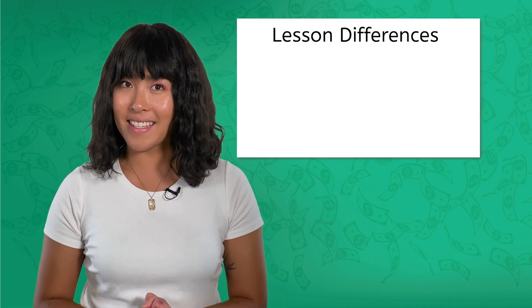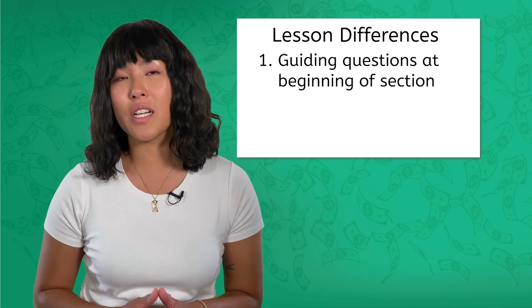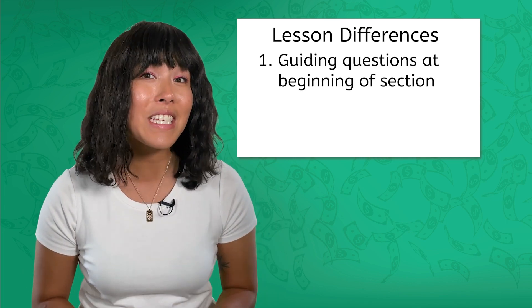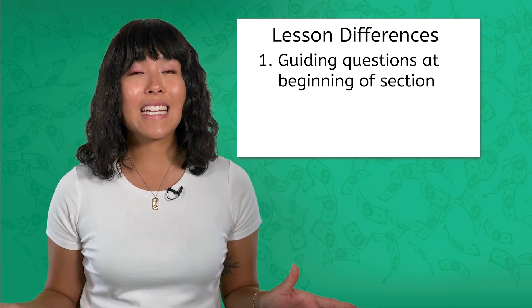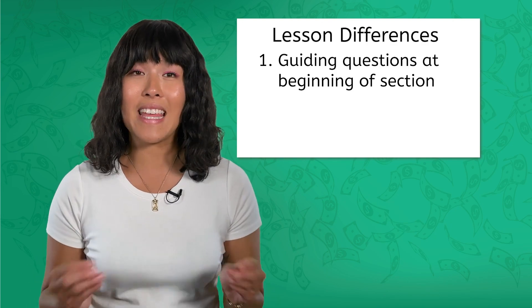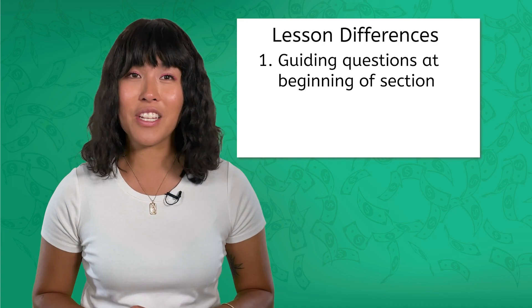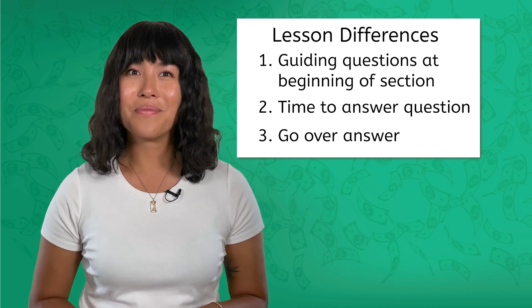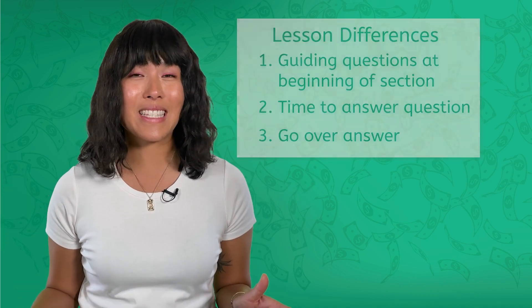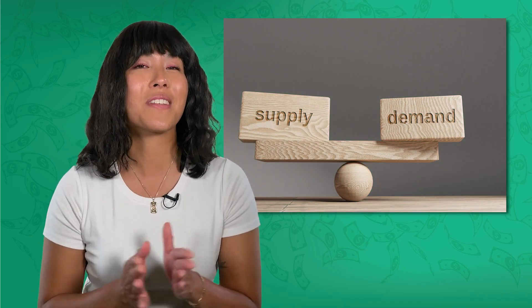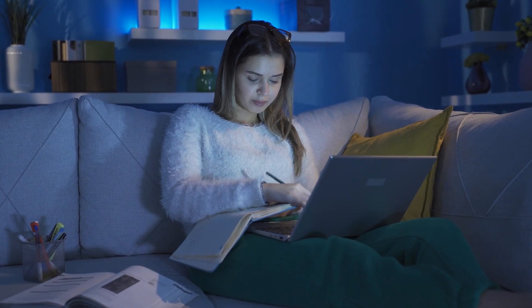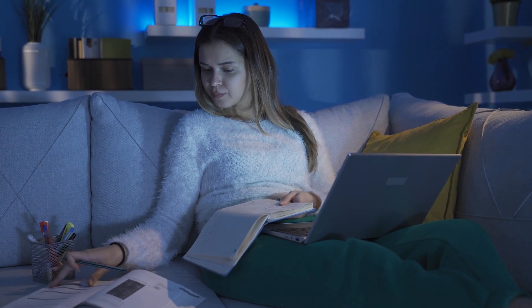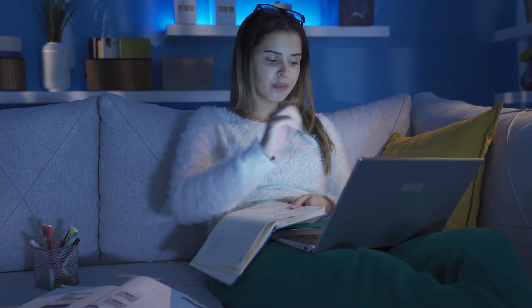Before we get started, I wanted to talk about some differences in today's lesson. In most lessons we cover material and ask a guiding question at the end of that section. Because today's lesson is a review of concepts we've discussed in this unit, I'll ask the guiding question at the beginning of each section, give you some time to answer, and then go over the answer with you. This is a great way to see just how well you've understood the topics in this unit. If answering a question feels easy and your answer is similar to what we discuss, it's probably because you have a good understanding of the material.